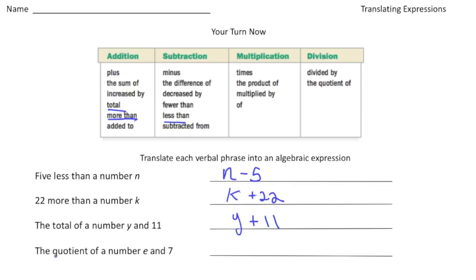And then finally the quotient of a number e and 7. Well quotient is involved with division so that's going to be e divided by 7. So when in doubt always look back at this table. It tells you what word is associated with which operation sign. How'd you do?